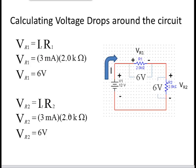What I want to do next is calculate the voltage drops across each of the resistors, and we're going to find that the voltage drops should equal the source. Using Ohm's Law, the voltage across R1 is equal to the total current times the value of R1 — that's 3 milliamps times 2.0 kilohms, giving 6 volts. Because R1 and R2 are equal values, the voltage drop across both resistors is identical. We can confirm that VR2 equals IT times R2, which gives 6 volts as well.